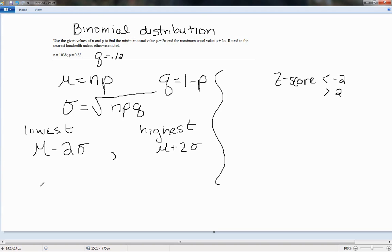So if we want to find our mean, our mean here would just be 1038 times .88, and I'm just going to quickly put this into my calculator. So this would be 913.44, so I'm just going to round to one decimal place, 913.4.